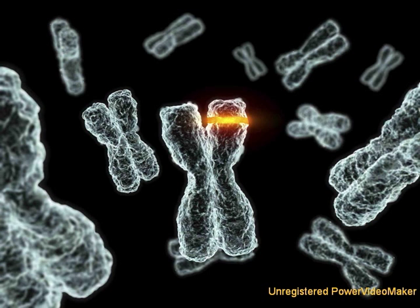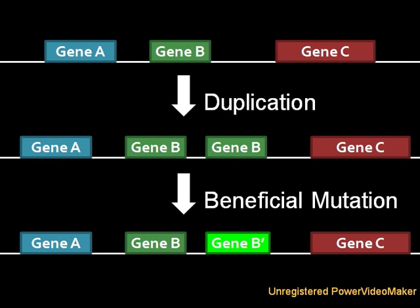More often than not, organisms don't reinvent the wheel and use pre-existing genes or domains to form new genes. But every now and then, a completely new gene forms from nothing more than random DNA, adding more raw fuel to the engine of life we call evolution.